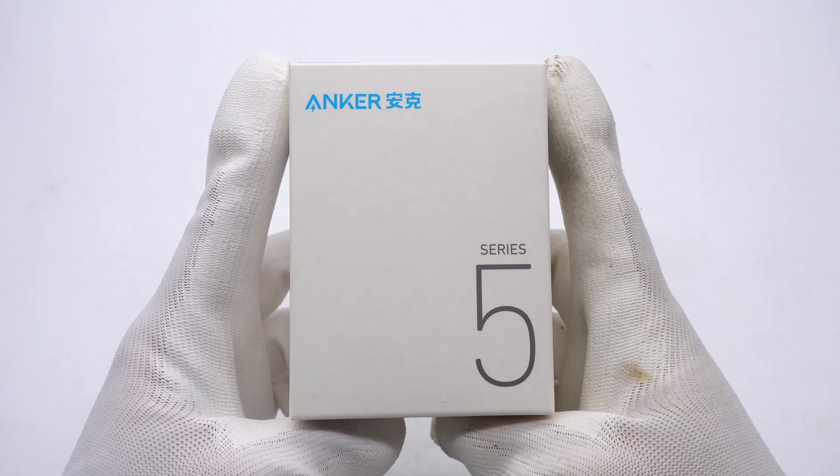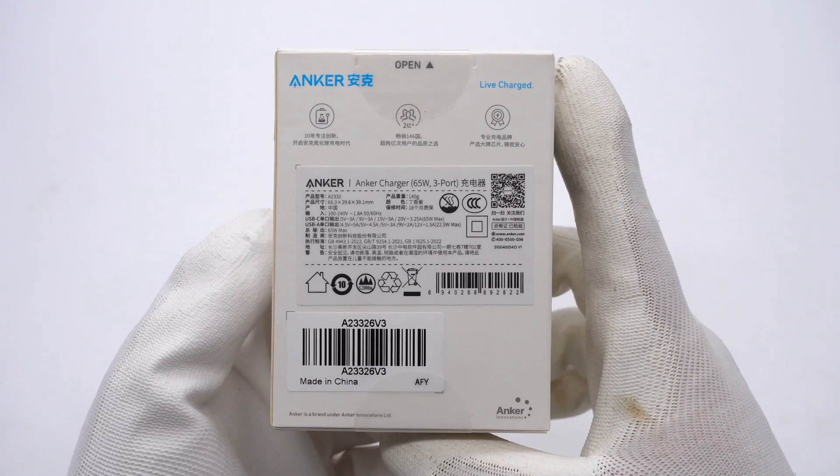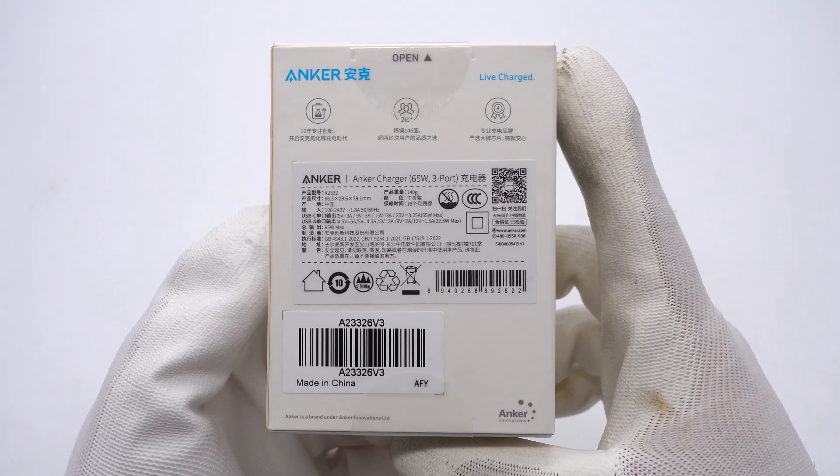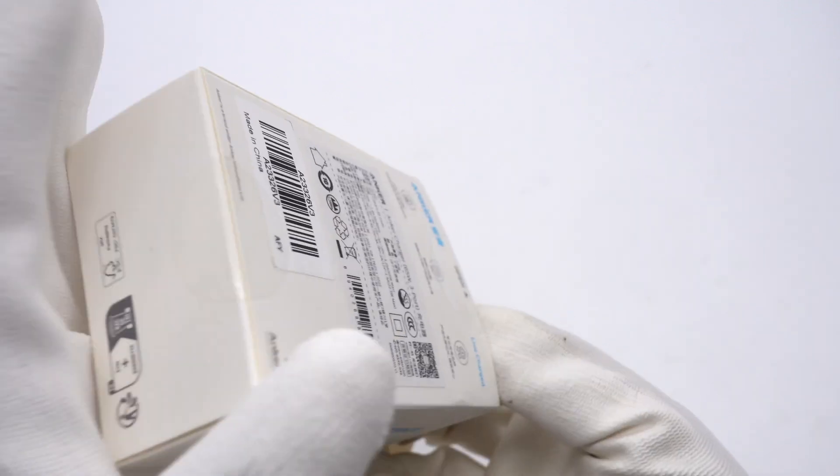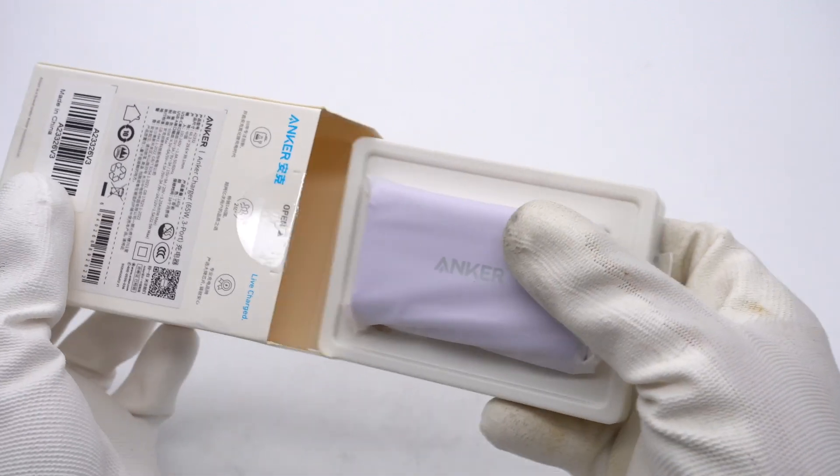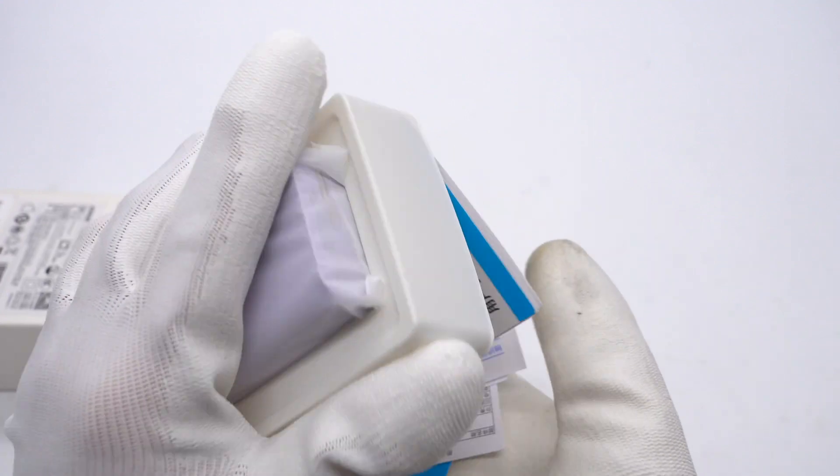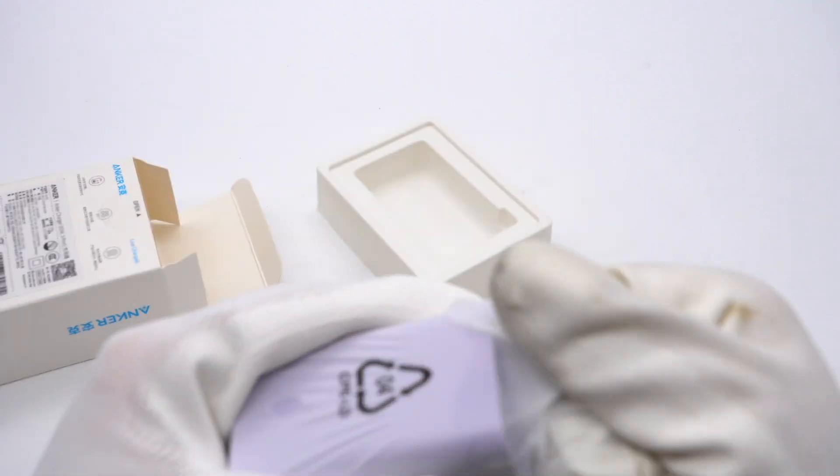The Anker and Series 5 are printed on the box. And the back has specs info, which we'll talk about later. Let's take out the charger. The box contains the charger and some documents. Remove the protective film.